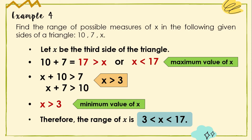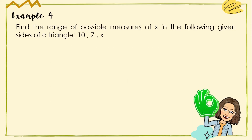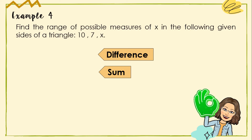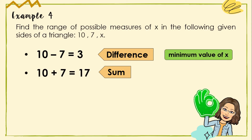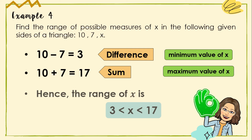Using the easier method: the difference of 10 and 7 is 3 (minimum value of X), and their sum is 17 (maximum value of X). Thus we can form the range: X is greater than 3 but less than 17.